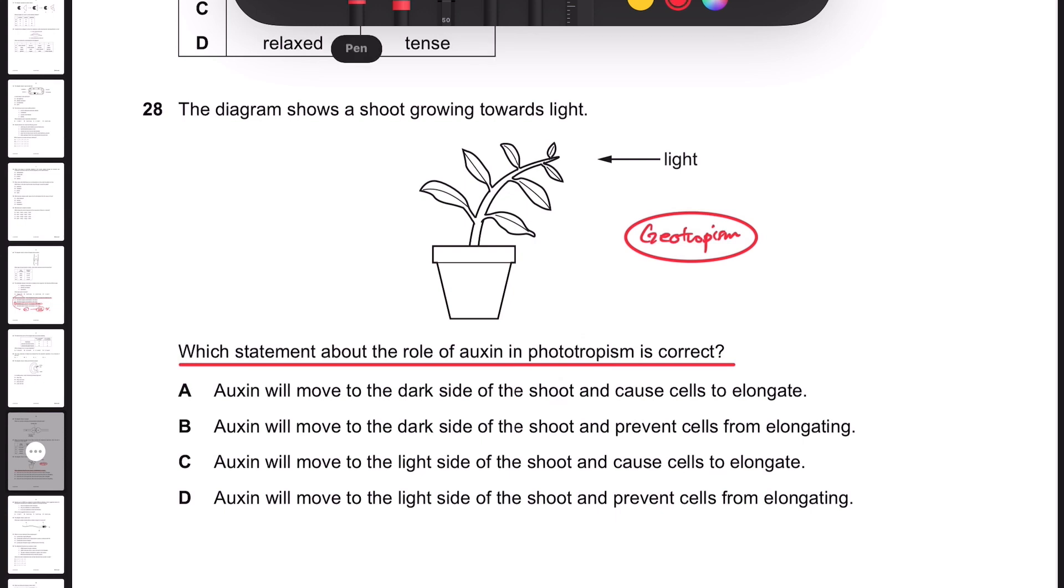For phototropism, the stimulus is the photo, light. For geotropism or gravitropism, the stimulus is gravity.